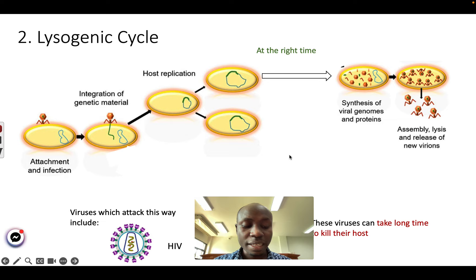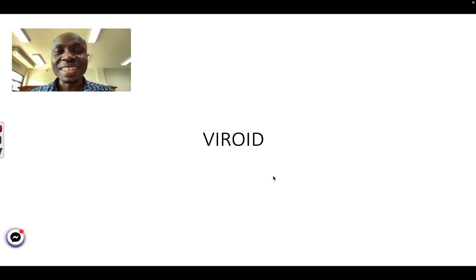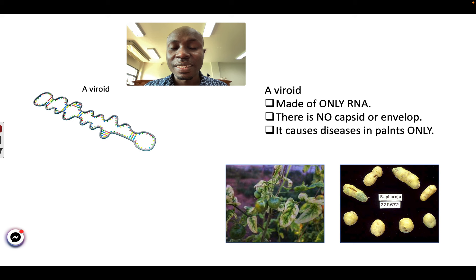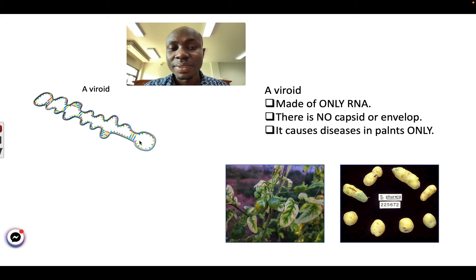Let's quickly talk about viroid. Viroid is even simpler than a virus. It is just an RNA that can cause diseases. There is no capsid around it, and there is no envelope around it. It is just RNA — no capsid, no envelope — and it can cause diseases in plants only. This is a picture of a plant affected by a viroid.